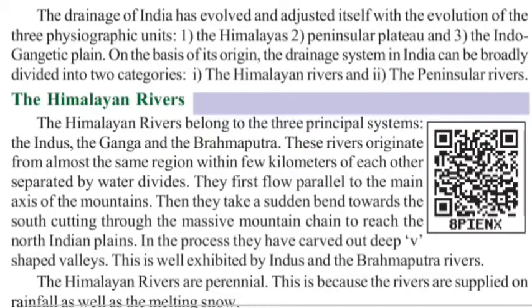The Himalayan and Brahmaputra rivers have developed V-shaped valleys. The Himalayan rivers are also known as perennial rivers because they are supplied by rainfall as well as melting snow, and they flow throughout the year.